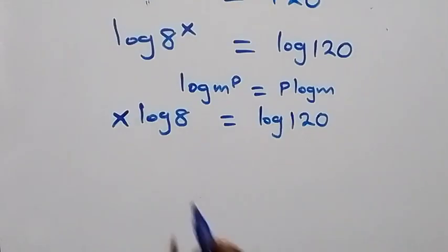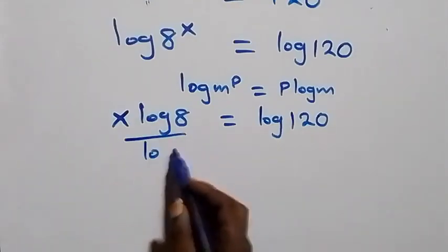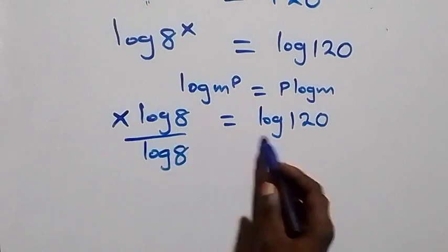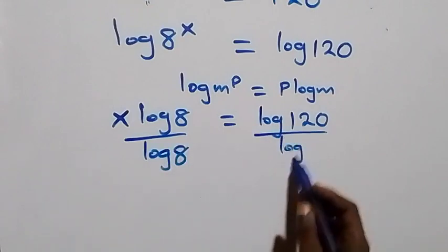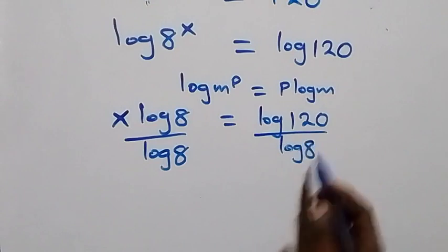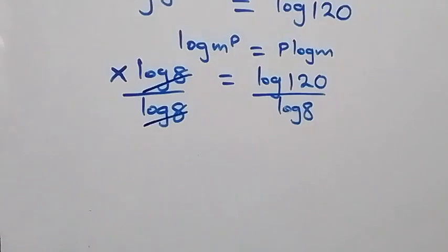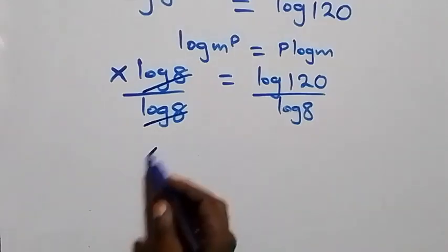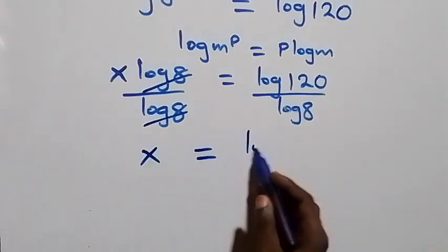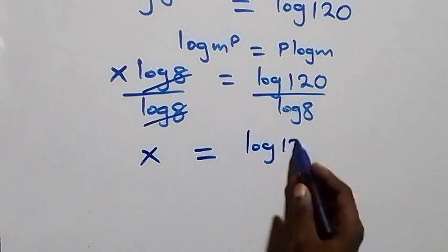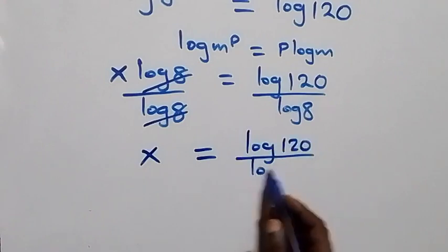The next step, we divide both sides by log 8. This gives us x equals log 120 over log 8.